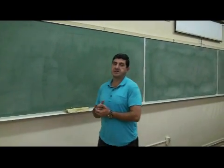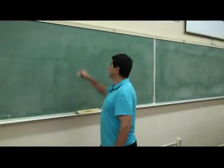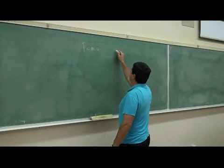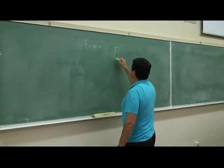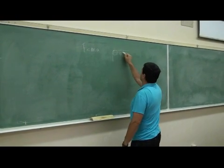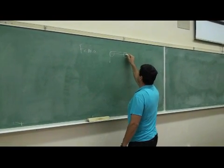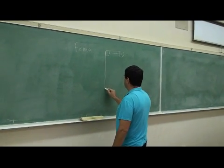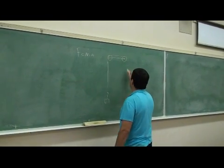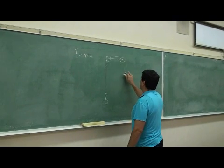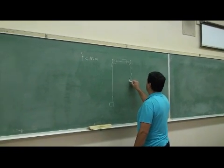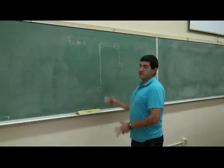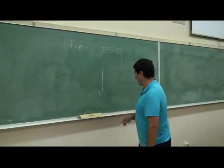Now we're back. We're going to analyze Newton's equations — F equals MA — and we're going to use a setup called the Atwood's machine. We have two pulleys like this and a string over the pulley.